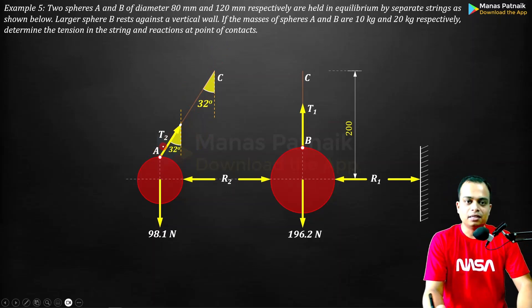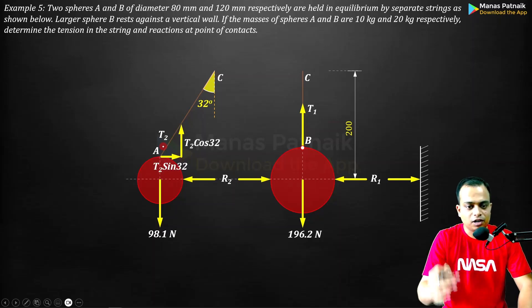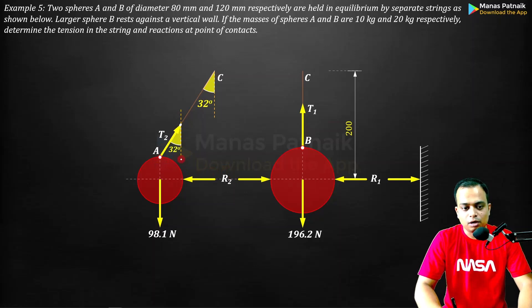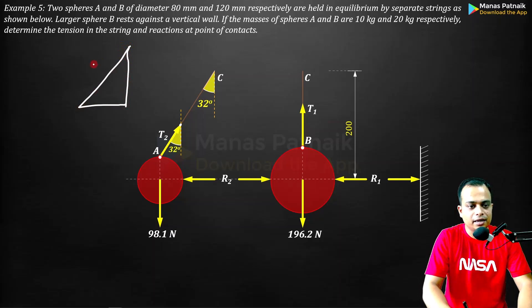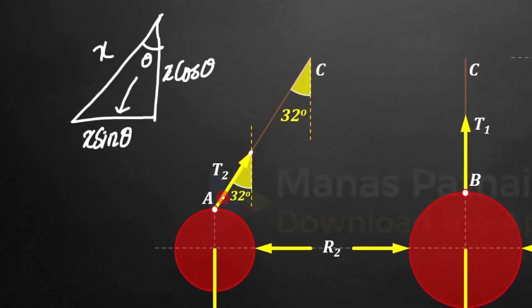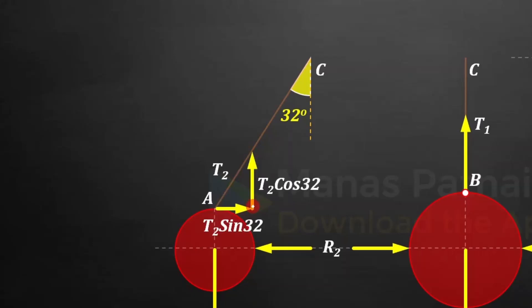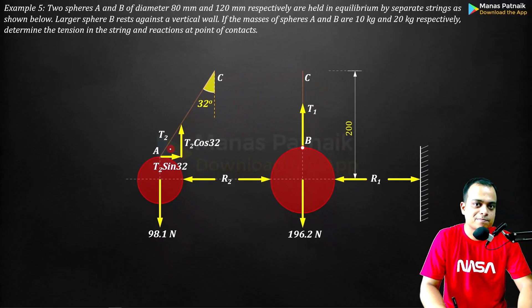Now we can apply the equilibrium conditions. Let me demonstrate - if you've got a triangle, this is X, this is theta, then the X component will be the sine component. The side opposite to the angle will have the sine component, so this is X sin theta. The one left is X cos theta. In the same fashion, this is T2, this is 32 degrees, so this is T2 sine and this is T2 cos.